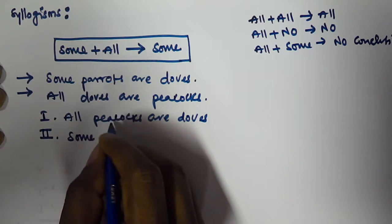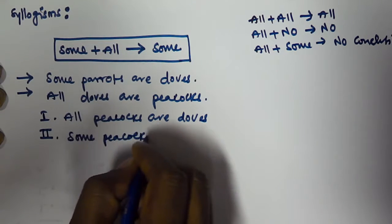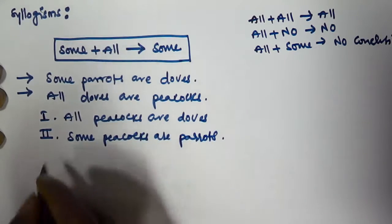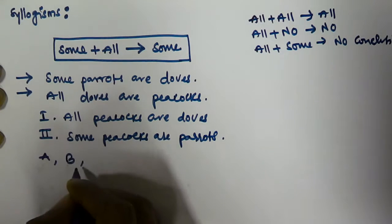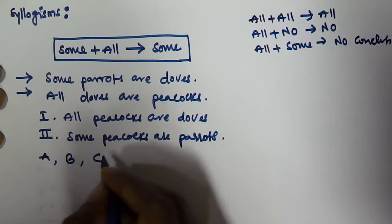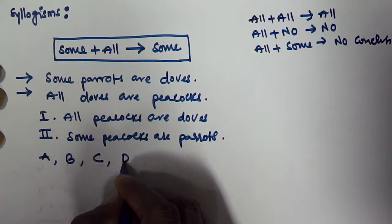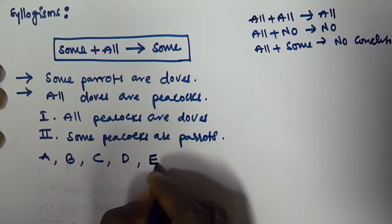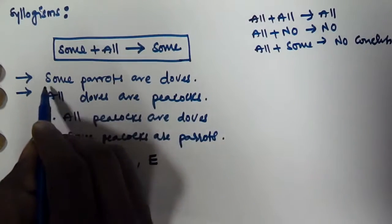The second conclusion given is: some peacocks are parrots. We have to select A if conclusion one alone is true, B if conclusion two alone is true, C if either conclusion one or two is true, D if both conclusions are not true, and E if both conclusions are true.